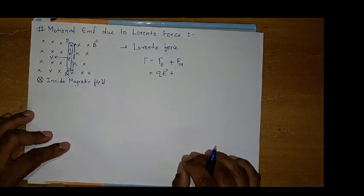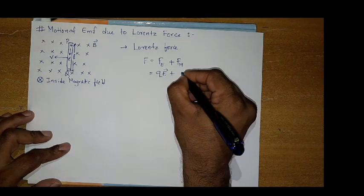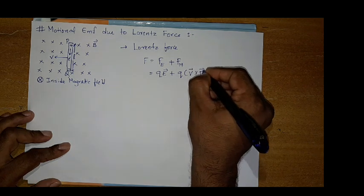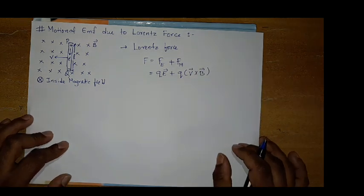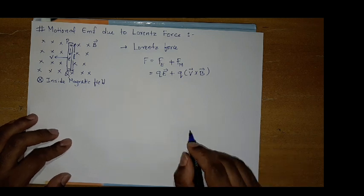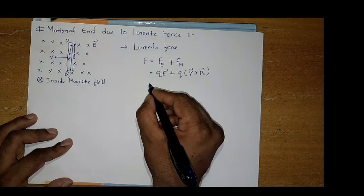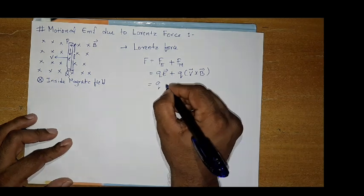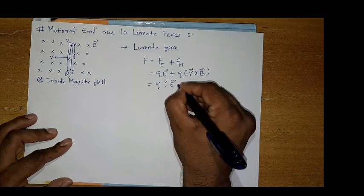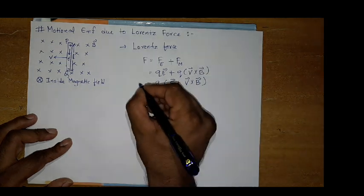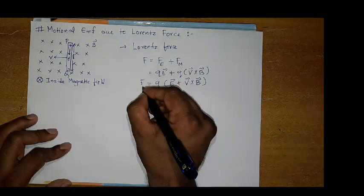Now, force due to magnetic field. That is Q in a bracket, V cross B. V is the velocity and B is the magnetic field. So that we know from the chapter magnetism. So it looks like Q in a bracket, E plus V cross B. So this is what Lorentz force. This is what Lorentz force.